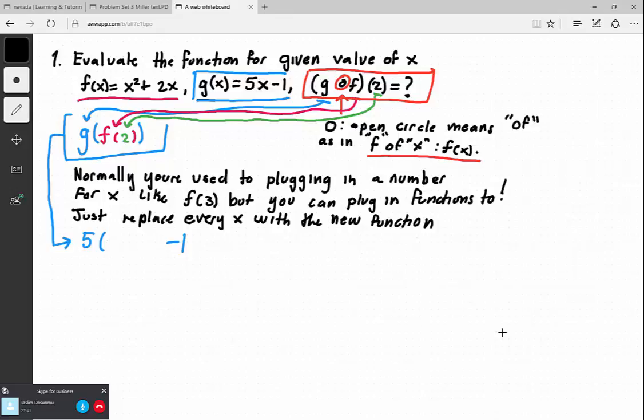So 5 times f of x, which is x squared plus 2x in this case, and then lastly minus 1. Now what we can do next is actually simplify this and basically run algebra on it to get it into its simplified form.